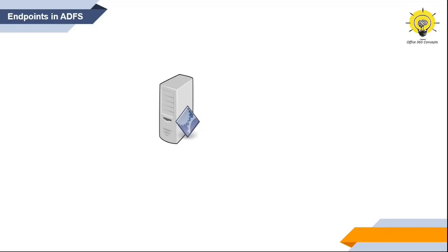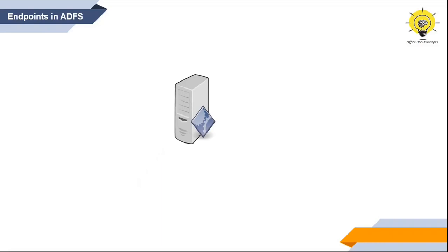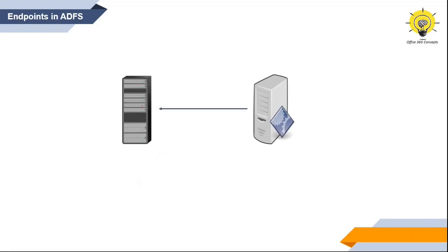What are endpoints in ADFS? An application can be a browser-based application or it can be a rich client application, for example an Outlook client. That means a user can access this application using either a web browser or using Outlook client. If this application is integrated with ADFS server, then ADFS should be capable enough to receive all types of application requests — from web-based applications and from rich client applications. ADFS identifies these types of requests with the help of endpoints.